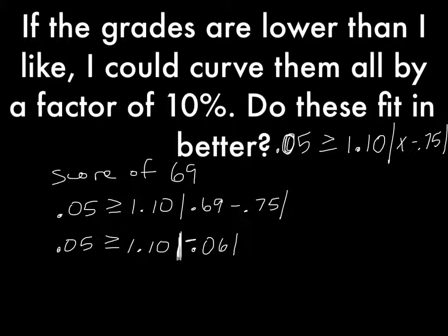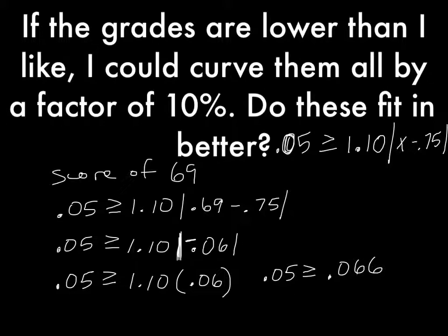Say again, absolute value bars work like parentheses as far as order of operations. So if I had this, I would need to do my parentheses first, so I'm going to do my absolute value bars first. 0.05 is greater than or equal to 1.10 times the absolute value of that, which is positive 0.06. Now I need to multiply. 0.05 is greater than or equal to 1.06—is 0.066. Is 0.05 greater than or equal to 0.066? Still a no.